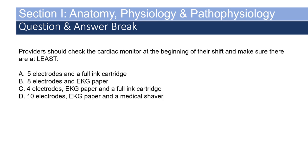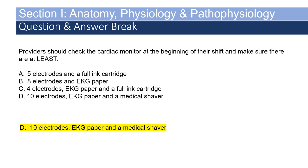Providers should check the cardiac monitor at the beginning of their shift and make sure there are at least: A) five electrodes and a full ink cartridge, B) eight electrodes and EKG paper, C) four electrodes, EKG paper, and a full ink cartridge, or D) 10 electrodes, EKG paper, and a medical shaver. The answer is D. A is incorrect — you need at least 10 electrodes to perform one 12-lead EKG, and cardiac monitors do not use ink cartridges. B is incorrect — not enough electrodes, though you would check EKG paper. C is incorrect for the same reasons — wrong number of electrodes and no ink cartridges.